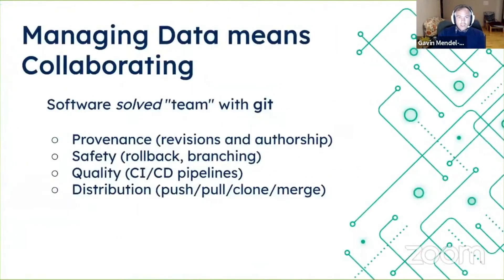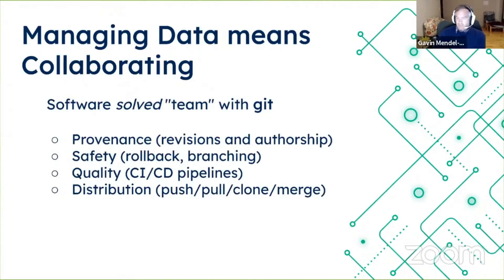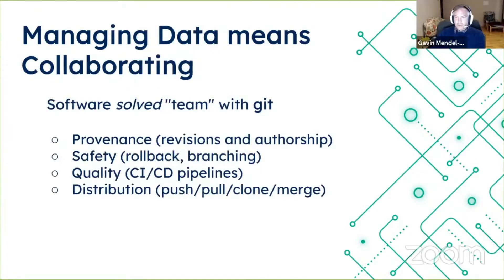Git really did a great job — it solved the team problem of collaboration with revision control. It gave us provenance: we know who made which changes, we can see the revisions and the authorship. It gave us safety — lack of fear is what allows us to do experimentation. If you have some kind of code resource, you can feel confident: make a branch, try an experiment on the branch, if it doesn't work out, leave it or throw it away. Or if it turns out to work, merge it back. And from that you have quality — you can get CI/CD type pipelines: you're not allowed to merge back to main unless you've passed certain tests.